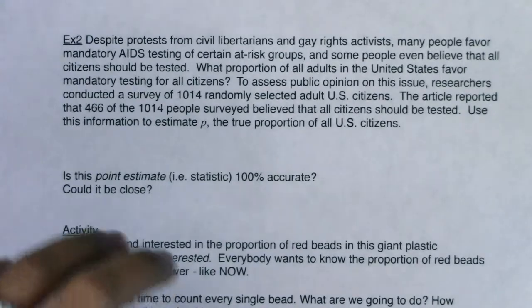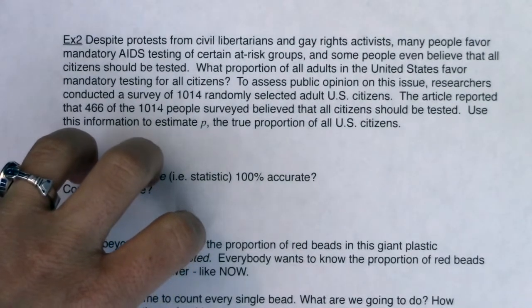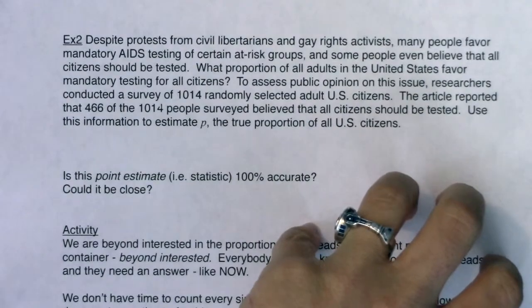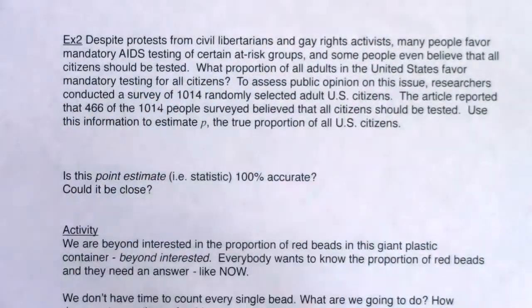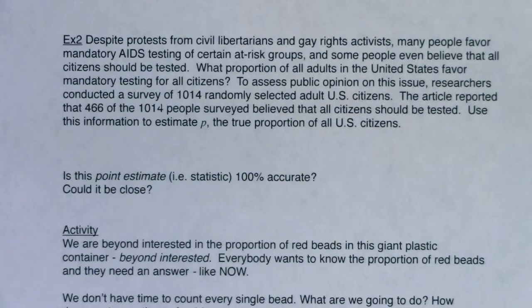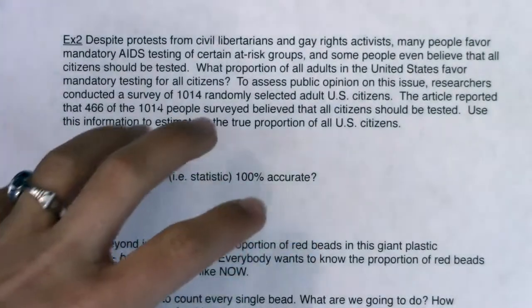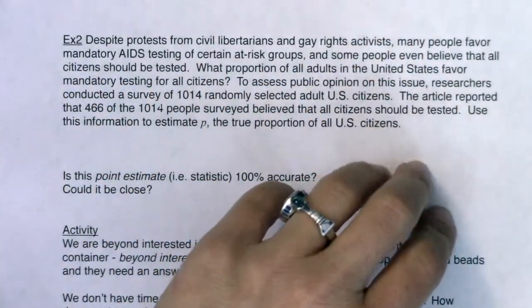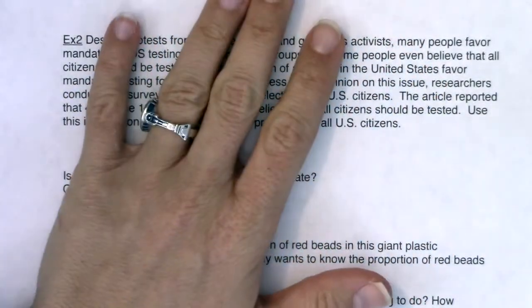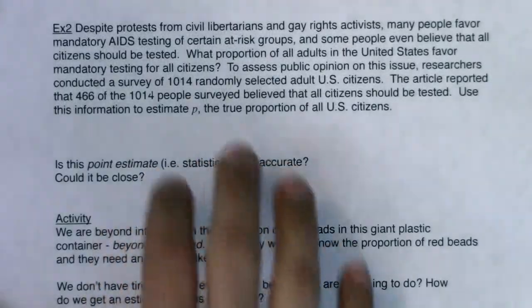Those were our two sampling distributions — we either had the sampling distribution for means or the sampling distribution for proportions. Those were the last two columns on that giant trait table that covered us through chapters four through seven. That's where we left off and that's exactly where we're picking up. Am I in mean land or proportion land? From here through the rest of the chapters, that's the question you want to ask yourself first.